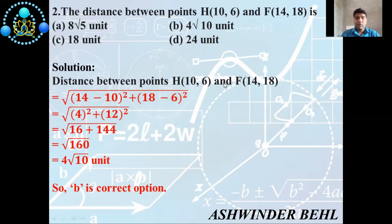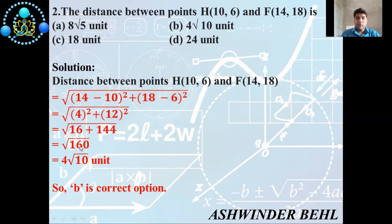Distance between H and F = √[(14 − 10)² + (18 − 6)²]. So 14 − 10 = 4, and 18 − 6 = 12. Then 4² = 16 and 12² = 144. So 16 + 144 = 160... √160 = 4√10 units. So option B is the correct answer.